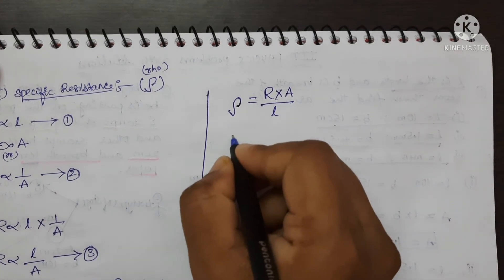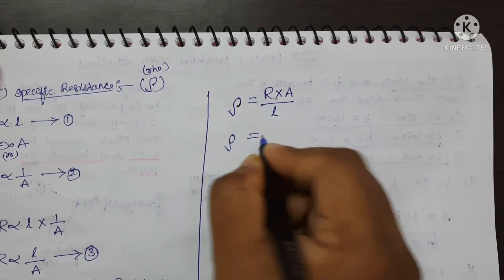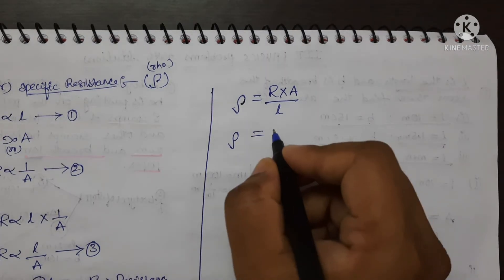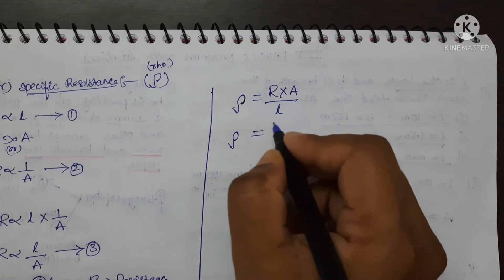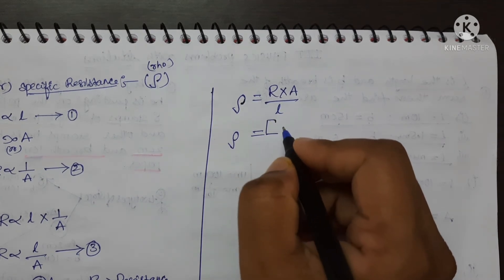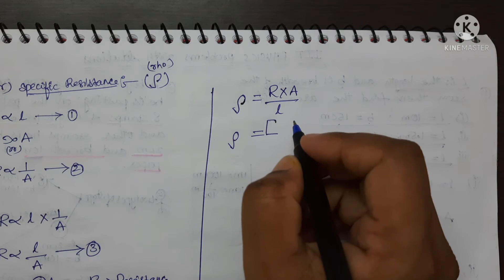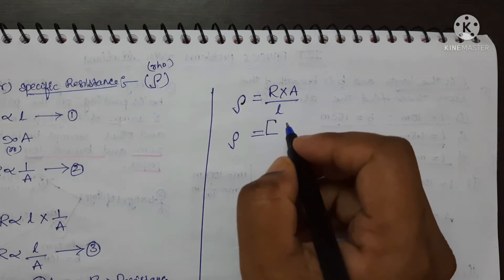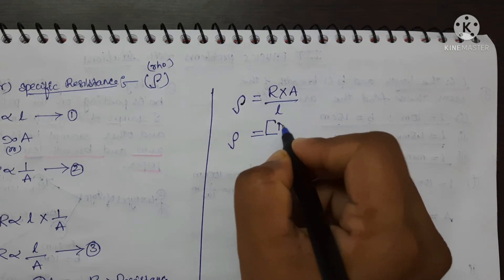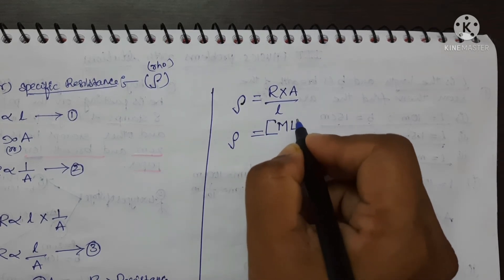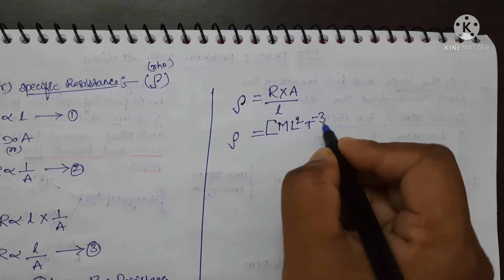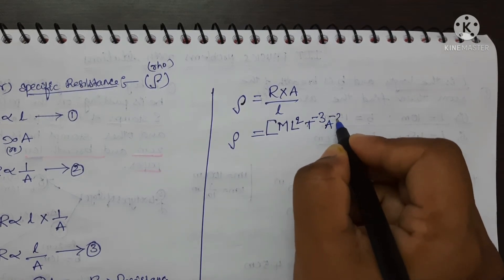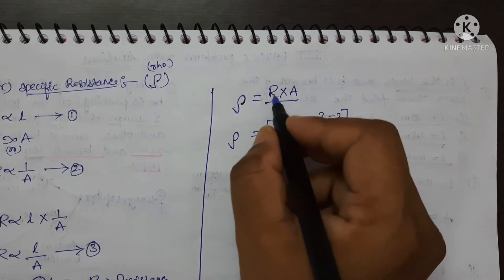Rho equals R into A by L. Here R is the resistance. I am writing directly the dimensions of resistance, which I have already uploaded a video for — I will give the link in the description box, do check it out. The dimensions of resistance are M, L squared, T to the power minus 3, A to the power minus 2.